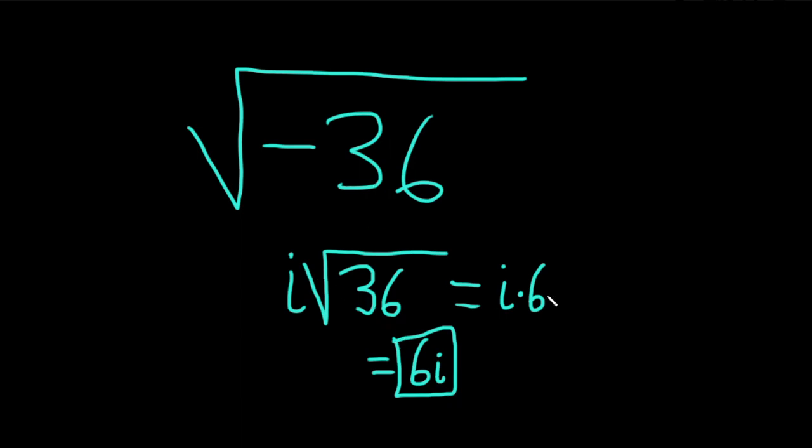And really, you can skip all of this. You can go straight from here to the answer. Basically, you see the negative in the root, so you know that's an i. And then the square root of 36 is 6. So this is 6i.